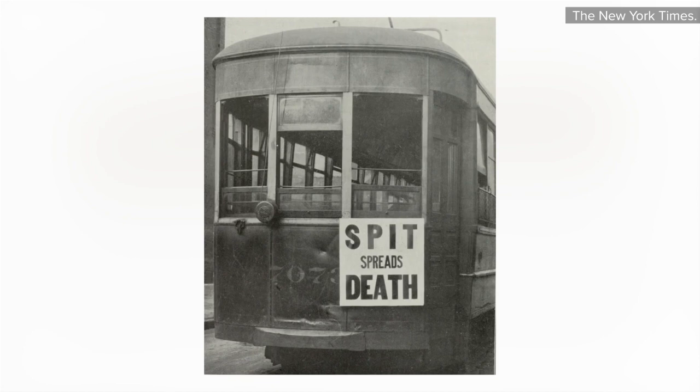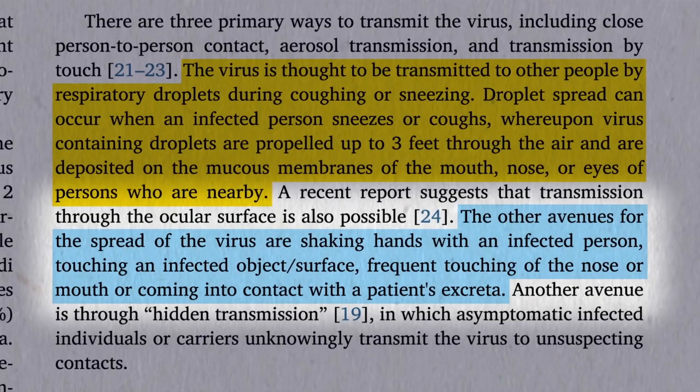What does retracted breathing look like? Retractions are when the area just below the neck or under the breastbone sinks in with each breath — one way of trying to bring more air into the lungs. There may be sweating in the head, but the skin does not feel warm to the touch.